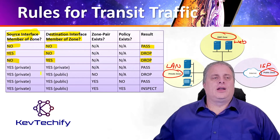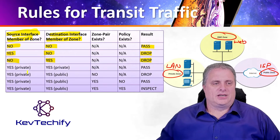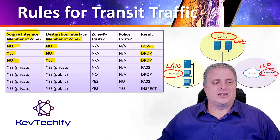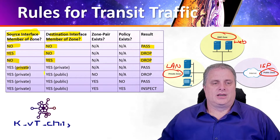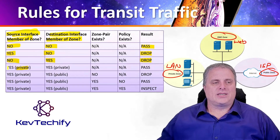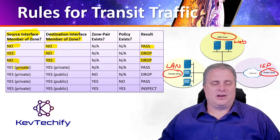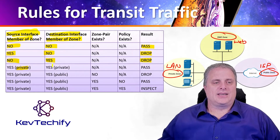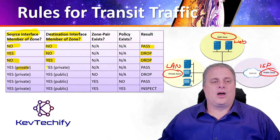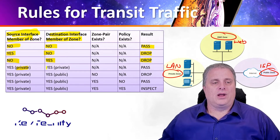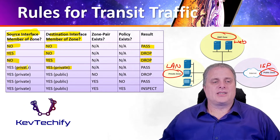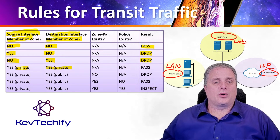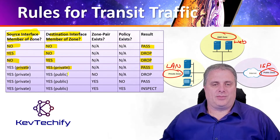Next, we look at the interfaces and the zone they belong to — is it public or private? If we're passing data where the source interface is part of the private zone and the destination interface is also part of the private zone, because they both belong to the same zone, we're going to pass that information.